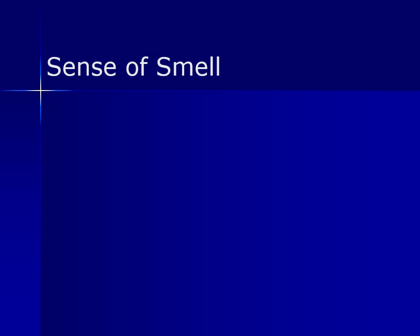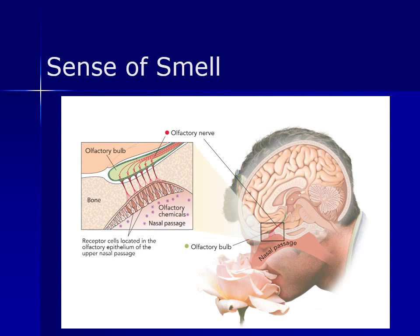Now for the sense of smell. Chemicals floating in the air reach the nostrils and dissolve in the mucus, and then specialized receptor cells called olfactory receptor neurons detect the odor. These neurons are capable of detecting thousands of different odors. The olfactory receptor neurons transmit the information to the olfactory bulbs, located at the back of the nose. The olfactory bulbs send messages directly to the limbic system, which is responsible for emotions and memories — which is why a certain odor or fragrance may remind us of certain people, places, or events from the past.